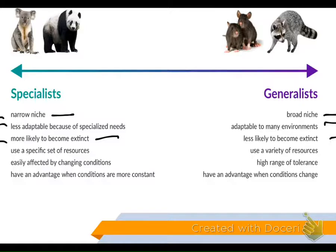The generalist can live any place and is less likely to become extinct. The specialist requires a specific set of resources, whereas the generalist can use just about anything. If conditions change, the specialist is not able to adapt very well, whereas the generalist — if there's a change whatsoever — who cares? They're just going to keep on going.